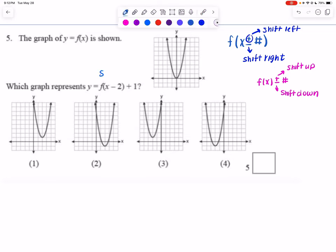So I'm basically shifting right 2, and then that plus 1 is telling me that's a shift up 1 because that number is on the outside. So I'm basically moving my graph 2 units to the right and up 1 unit.